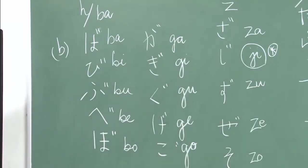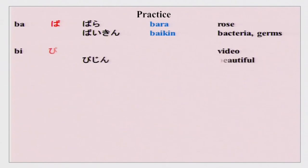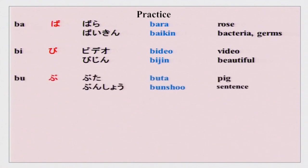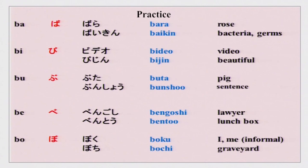Vocabulary for the ba series: bara, bikini, bideo, bijin, buta, bunshou, bengoshi, bento. And bo — boku. Boku is informal for watashi, which you have already done, but boku is only to be used by men, not by girls. Bochi is a graveyard as you can see.